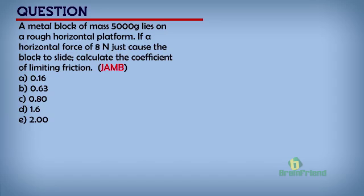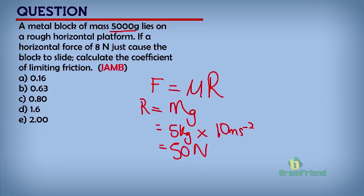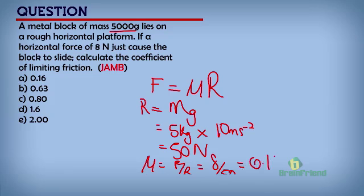Let us look at what we have learnt earlier. We said F, the frictional force, is proportional to the normal reaction. And the normal reaction R is equal to the weight of the object, which is M times G. In this case, M is 5,000 grams — if we change 5,000 grams to kilograms, it's going to be 5 kilograms. Then we multiply it by G, which is 10 meters per second squared, a constant, and we will have the normal reaction as 50 Newtons. The coefficient of limiting friction, mu, is now going to be F over R — that is 8 over 50 — and this gives us 0.16. So the answer is A: 0.16 is the coefficient of limiting friction.